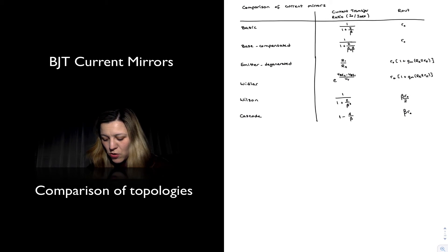And the cascode, very good current transfer ratio as well, and the best R out of all the configurations. So those two at the bottom have the best performance overall, at the expense of higher transistor count, as well as lower compliance range, because they have more transistors at the output.